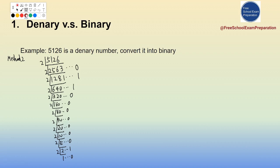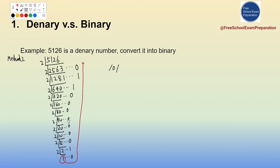To read the binary result, we start from the final quotient of 1 and read the remainders going upward (bottom to top). This gives us: 1, 0, 1, 0, 0, 0, 0, 0, 0, 1, 1, 0. So the binary representation of 5126 is 1010000000110₂.